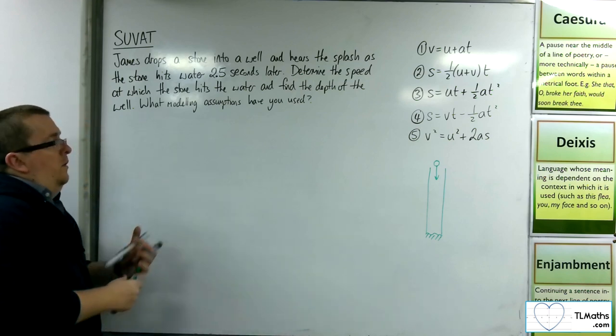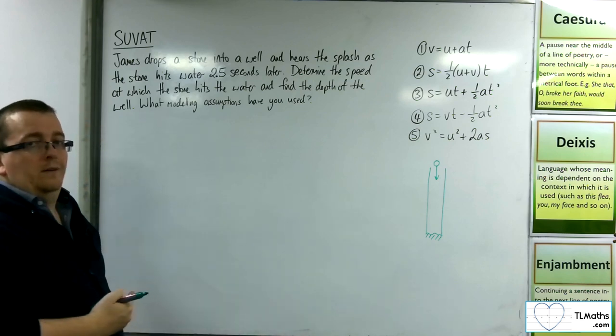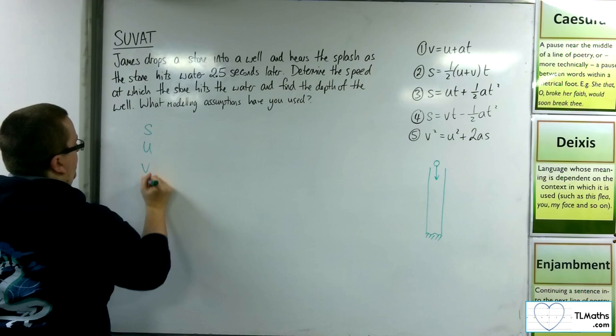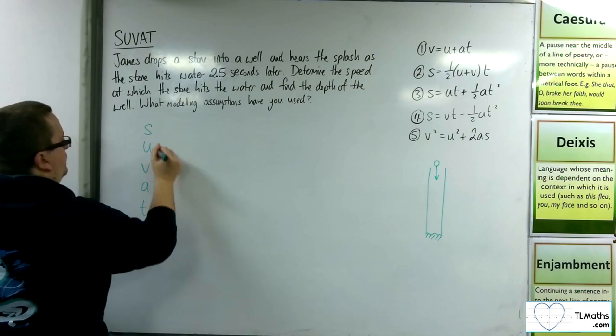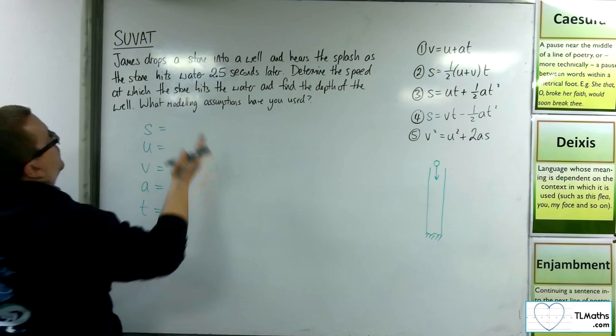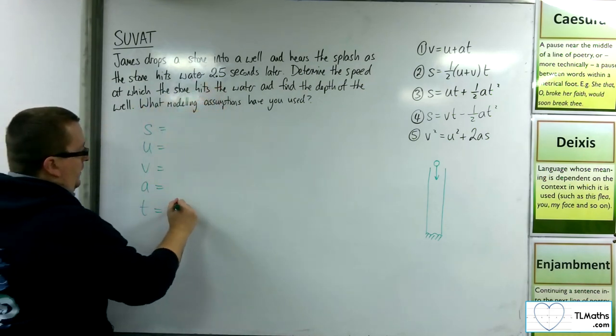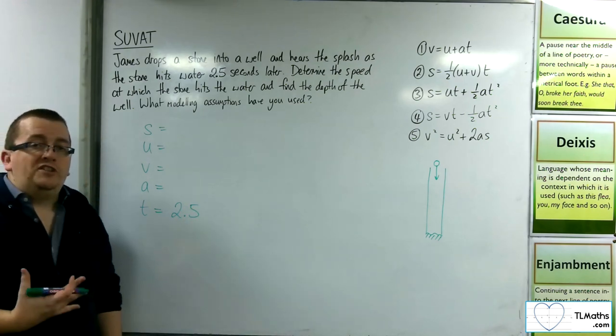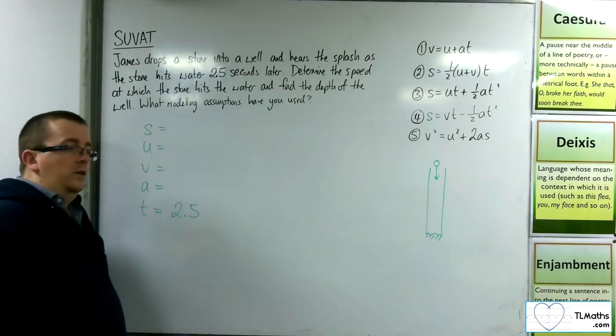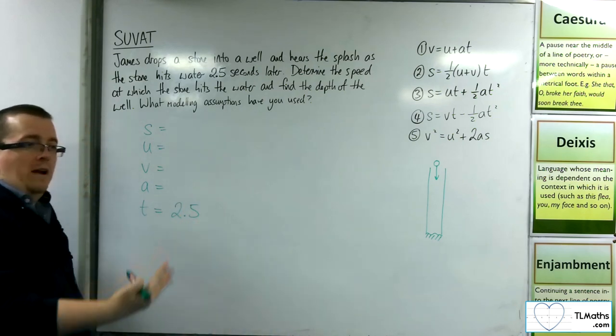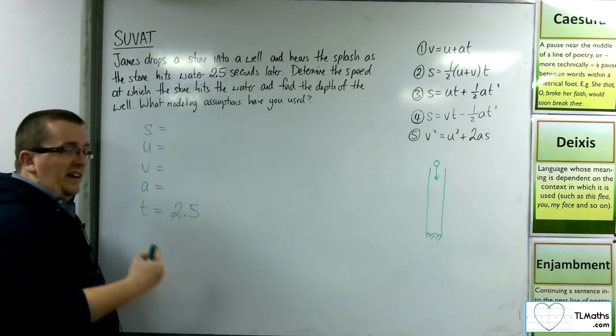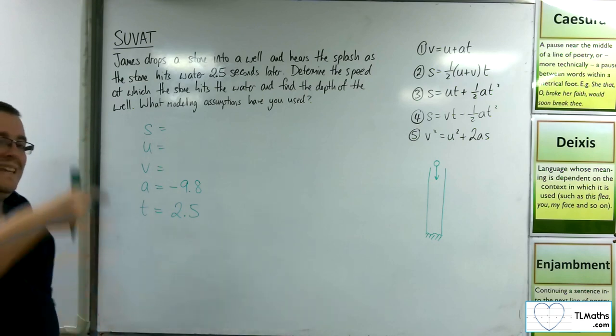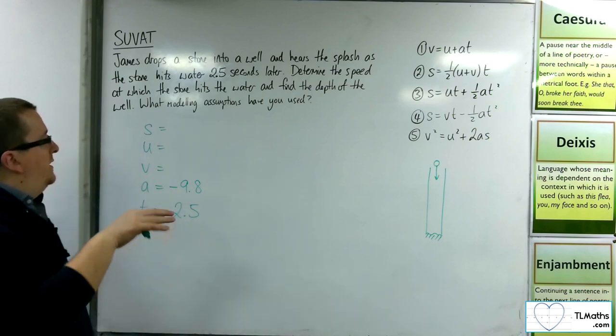So with another assumption that the acceleration is constant, we can then use the SUVAT equations. So 2.5 seconds is how long it is falling. The acceleration is just going to be due to gravity. I'm not throwing the stone down the well, I'm just letting it drop. So if we use 9.8 metres per second per second as gravity, because it's dropping and accelerating downwards, we're going to take that as minus 9.8.